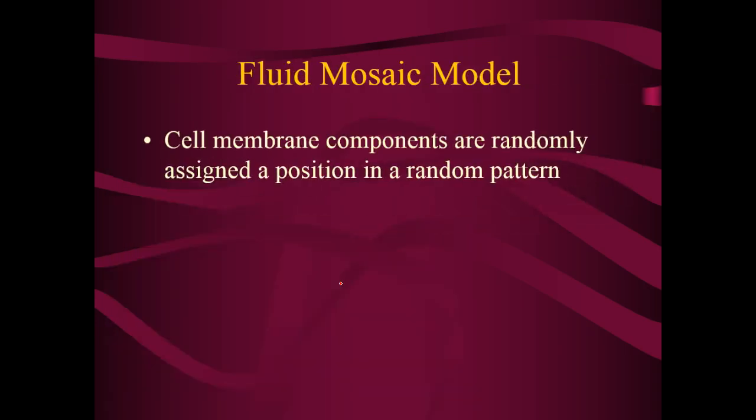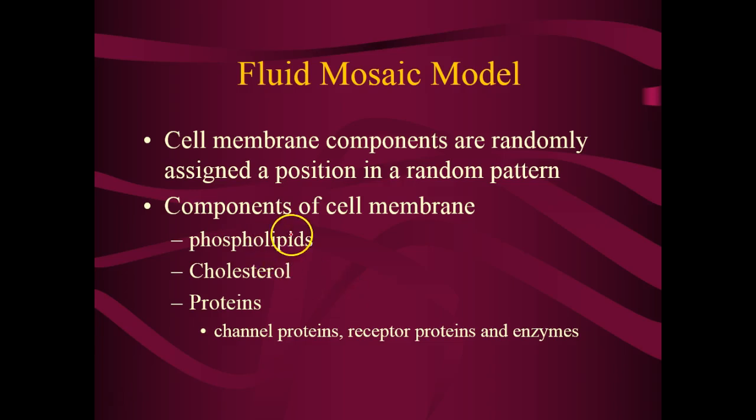What does it mean to talk about the cell membrane in terms of a fluid mosaic model? Fluid mosaic model means that the cell membrane components are randomly assigned in a random pattern. A mosaic in art is a big picture made up of individual tiles, individual glass pieces, or individual smaller paintings — when put together in a random pattern, it creates a bigger composition. The membrane is the same way: phospholipids, cholesterol, and all these different proteins come together to produce this big mosaic art piece that surrounds the entire cell — both prokaryotic and eukaryotic.